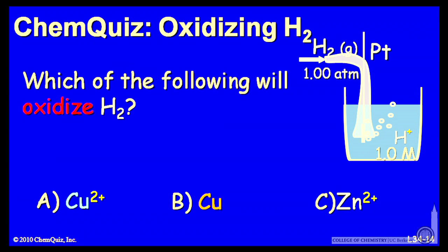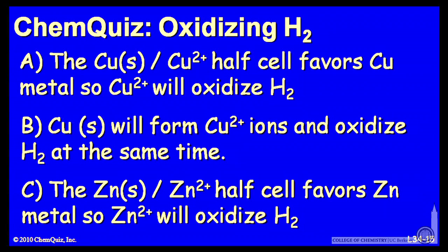Think about that for a minute and make a selection. Let's look at a possible explanation for each answer. A: the copper solid copper ion half cell favors copper metal, so Cu+ will oxidize hydrogen gas. B: copper solid will form copper ions and oxidize H2 at the same time. Or C: the zinc metal zinc ion half cell favors zinc metal, so zinc ions will oxidize H2.